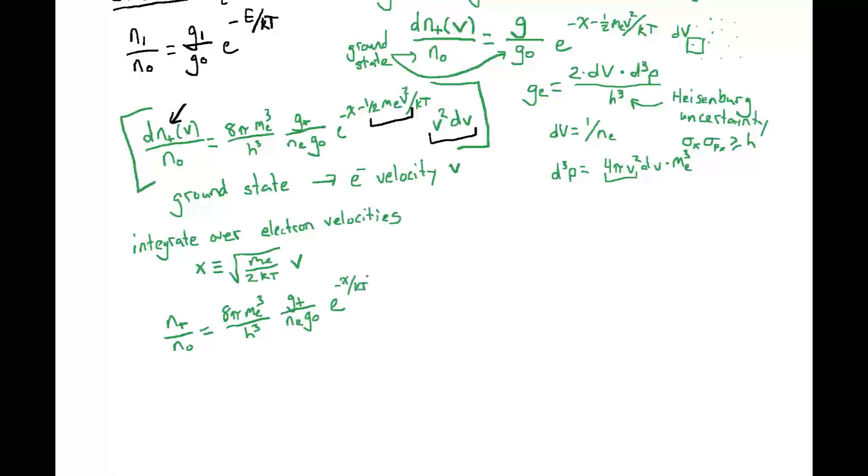I'll isolate the part of the exponential that has the ionization potential, e to the minus chi over kT. And now with our change of variables, we get a factor of 2kT over me to the 3 halves times the integral over x from zero to infinity of e to the minus x squared times x squared dx. Now it turns out this integral has a closed form that you can just look up. It comes out to be π to the 1/2 over 4.